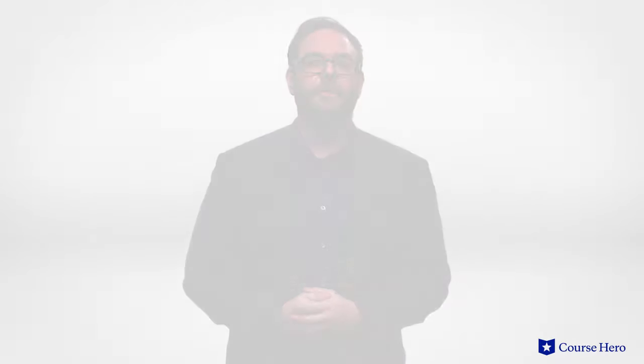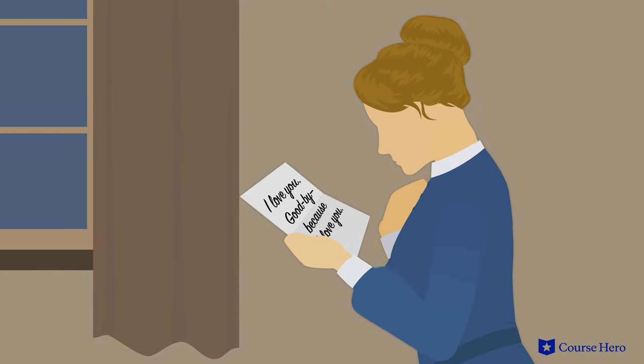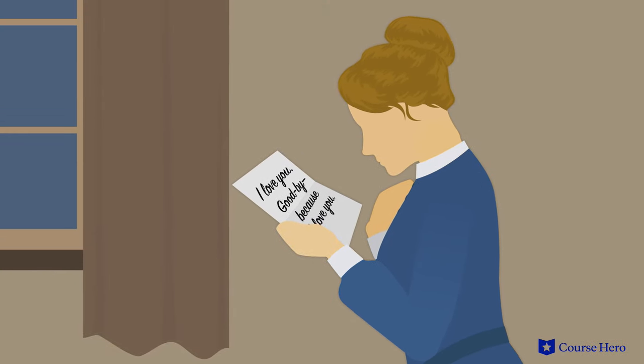Just as things get serious, however, Edna receives a message that Madame Ratignolle is in labor and needs Edna by her side. Since Edna previously promised to be there for her friend's labor and delivery, she feels obliged to go. She tells Robert to stay at her house until she gets back. It's clear she means they will spend the night together. When Edna returns, Robert is gone. He's left a note saying goodbye because I love you.